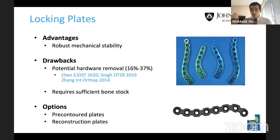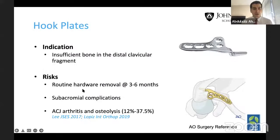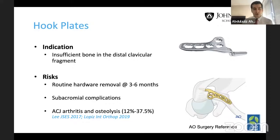Hook plates are a better alternative when there is insufficient bone stock compared to a pre-contoured locking plate. The hook goes under the acromion. However, routine hardware removal is required for all hook plates because they lead to AC joint arthritis, osteolysis, significant subacromial complications, impingement, and rotator cuff tears — those are the main drawbacks of this implant.